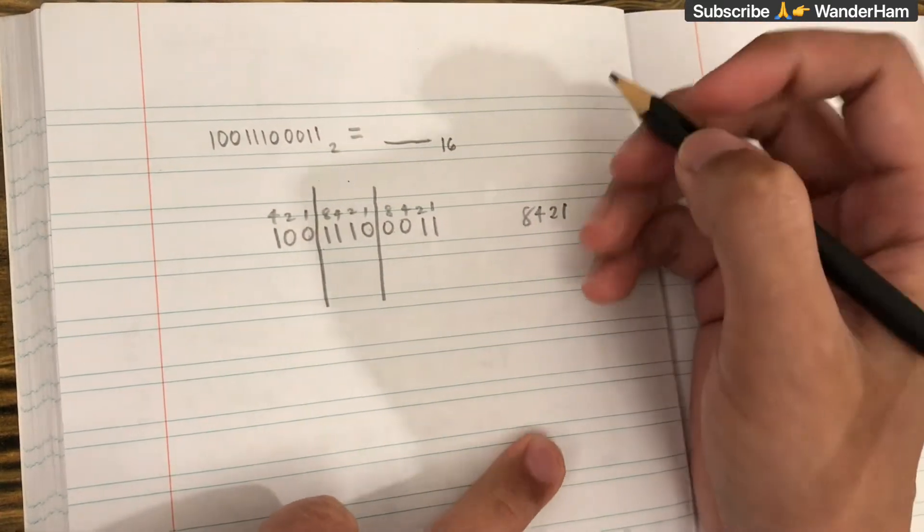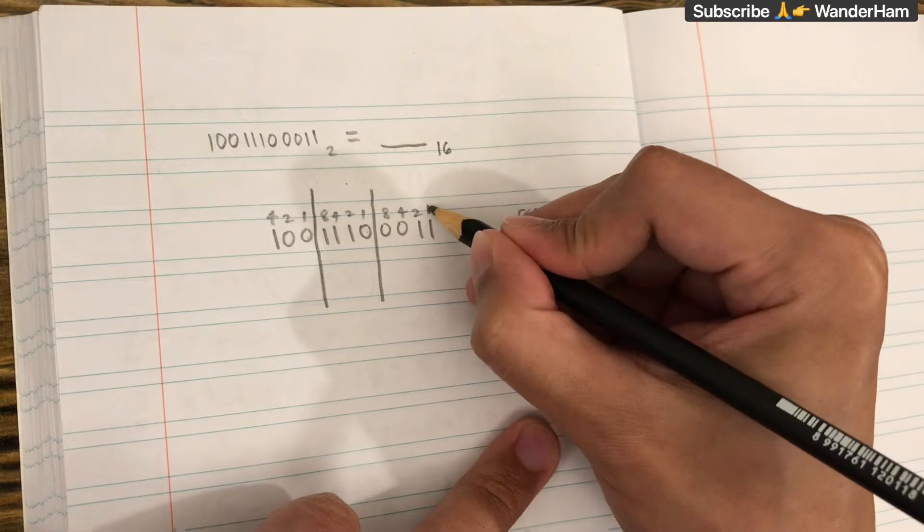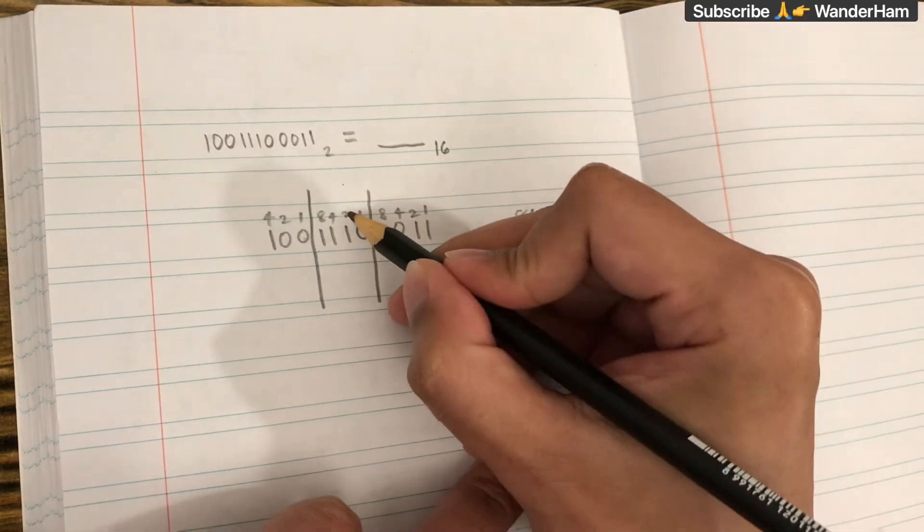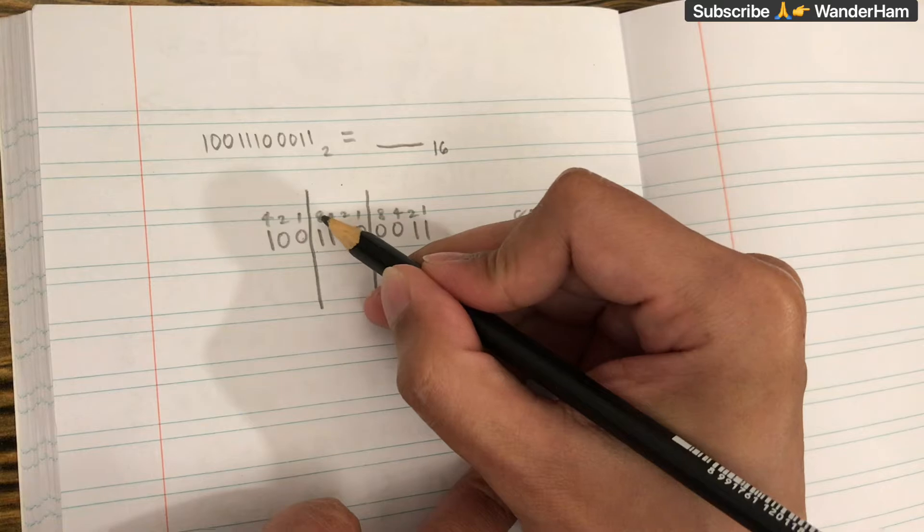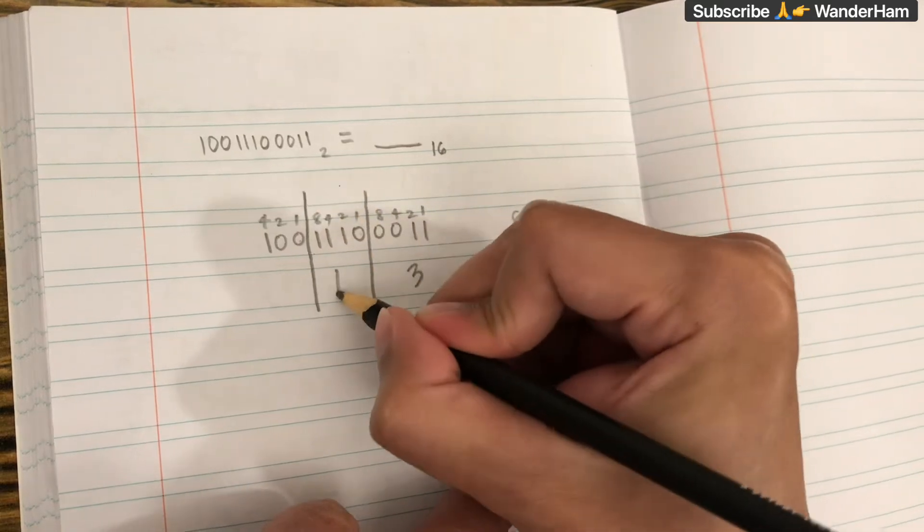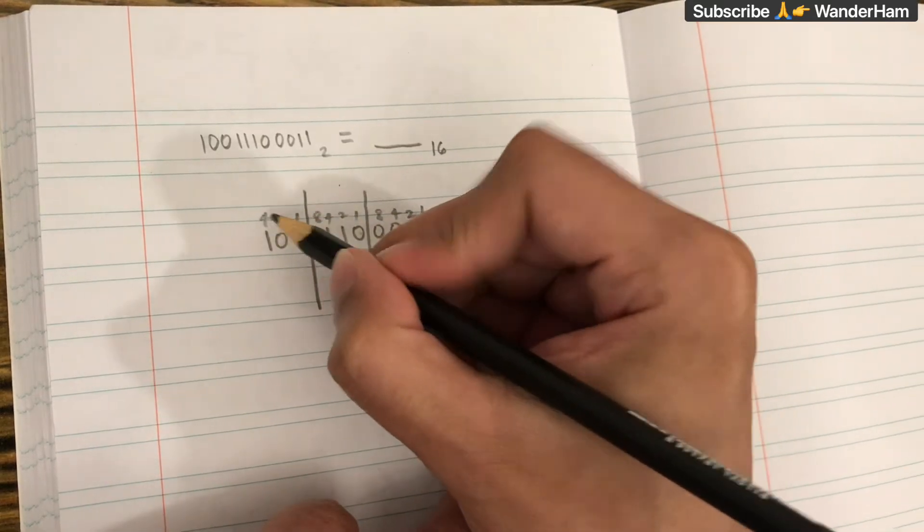And then we add the 1 values. 1 plus 2 is equal to 3. 2 plus 4 is equal to 6, plus 8 is equal to 14. And this one is 4.